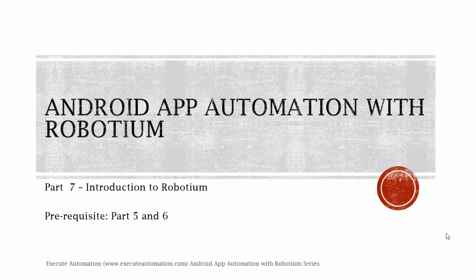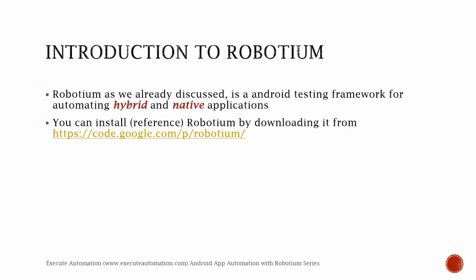That application is what we're going to use for automating in the next videos of this series. So let's get started. Robotium, as we already discussed, is an Android testing framework for automating hybrid and native applications. You can install Robotium by downloading it from the link shown here — or we can call this referencing, since Robotium is actually a jar file. All it is is a jar file, and you add that jar file into your Android test project.